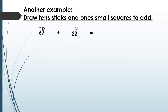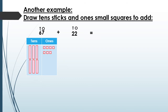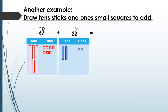Let's take another example — draw 10 sticks and ones small squares to add 67 plus 22. Let's draw our sticks and squares. I have six sticks in the tens and seven squares in the ones for 67.